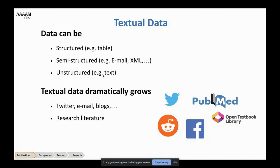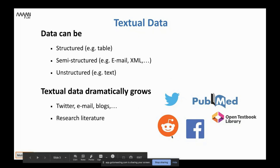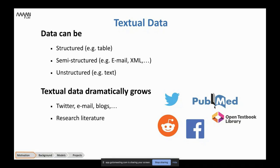Lastly, we have unstructured data, such as text. Textual data is dramatically growing over time, mainly because of the internet and social apps like Twitter and Facebook. We post a lot of textual information online, but also research literature such as the papers indexed on PubMed.